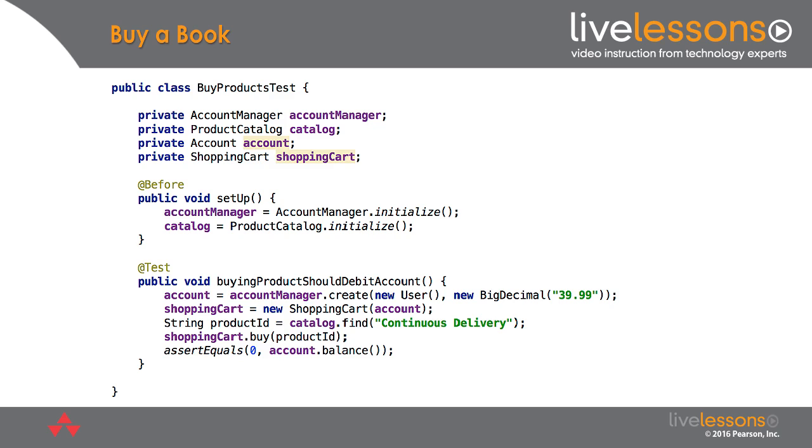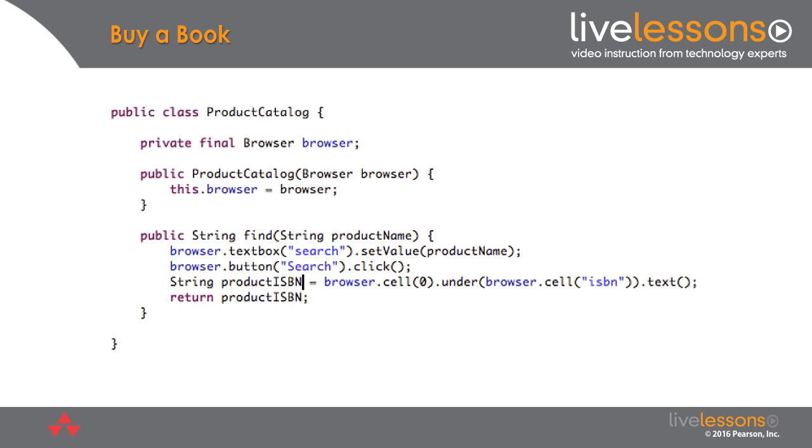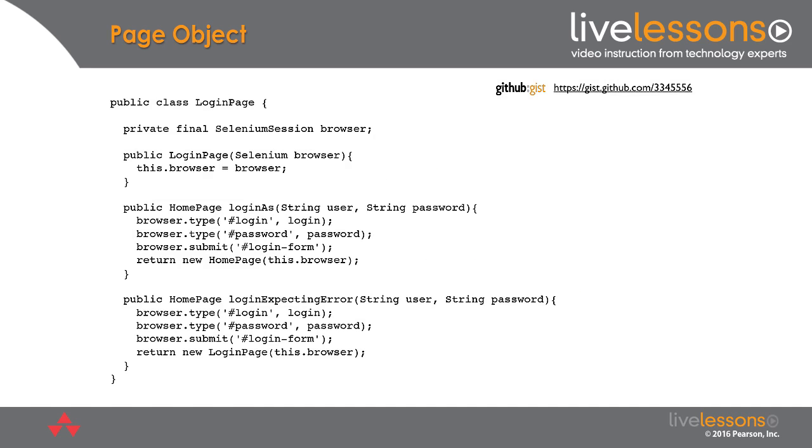Here we can see that there's no interaction with the system under test in this layer of the code base. All we're doing is interacting with the main objects on the test side and feeding in information on the initial state and validating that the system is in the expected state at the end. All the interaction with the system under test is in this separate layer and this is an example of an application of a pattern called the page object pattern.